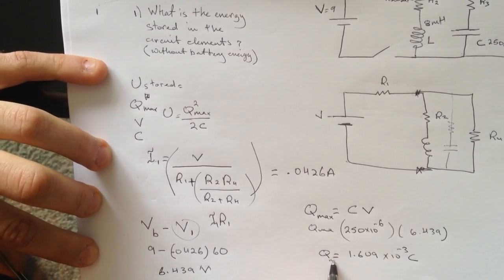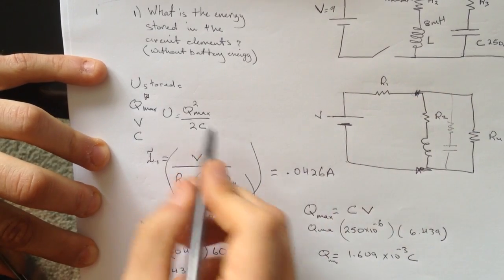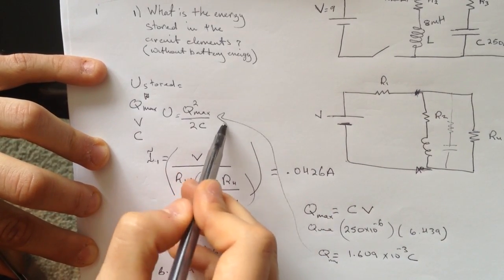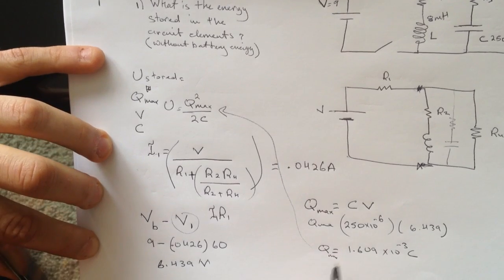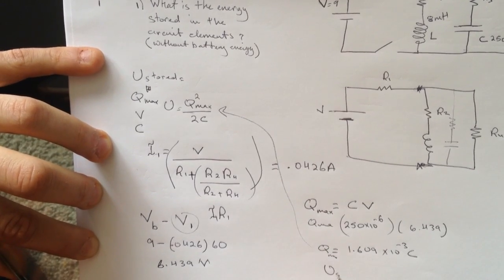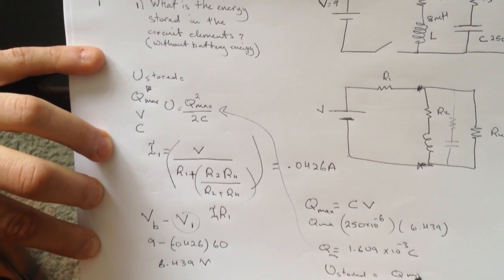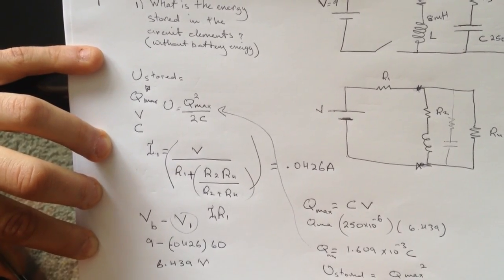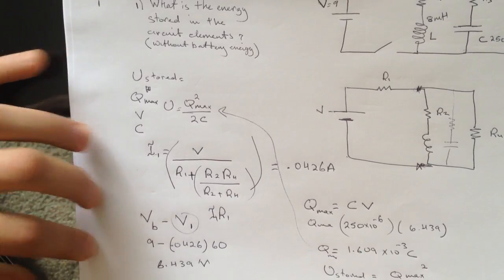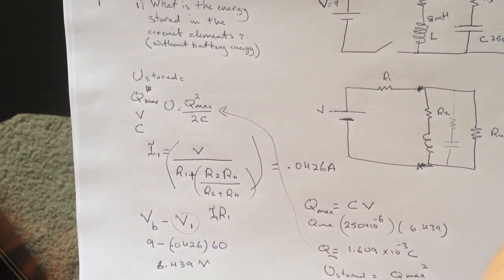We got the Q max for this capacitor, then the energy, we're going to now plug it in back here. So the U stored will be Q max squared over 2C. Then you'll get the answer.